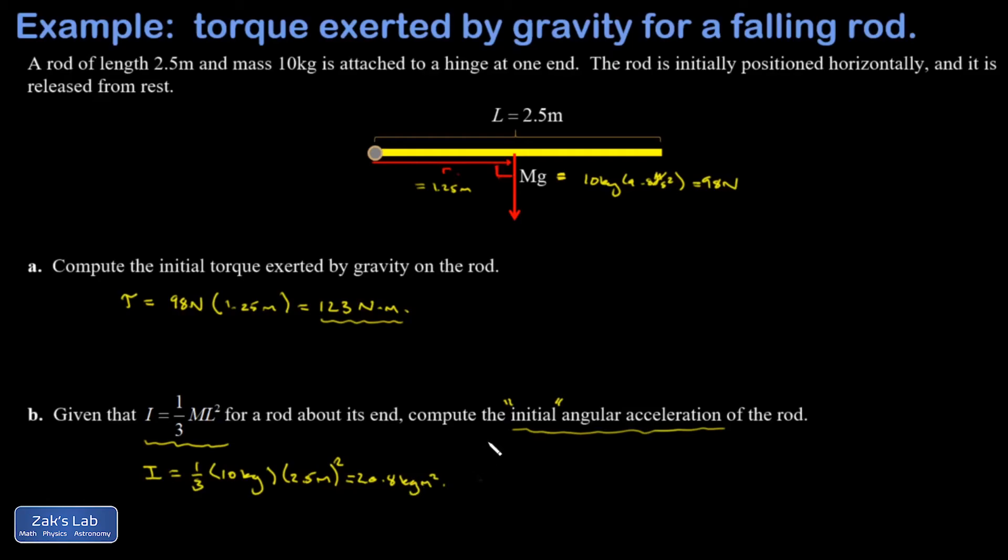I'm going to apply the rotational equivalent of Newton's second law: torque equals I times alpha. Solving for alpha, it's torque over the moment of inertia. My torque was 123 newton meters and my moment of inertia was 20.8 kilogram meters squared. This gives an angular acceleration of 5.91 radians per second squared. Again, this is only true for the first instant because as the rod begins to rotate, the alignment between the force of gravity and the lever arm will change.